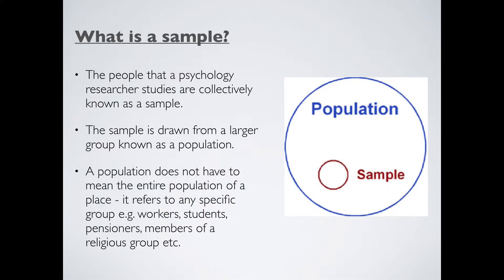Now, the thing about this word population — to a layman, a population is all the people in a particular group, like the population of London or the population of planet Earth. In psychology, the population doesn't have to mean the entire population of a country. The term can refer to any specific group, such as workers, students, pensioners, the unemployed, or members of a specific religion. The population that a particular study is interested in is called the target population.